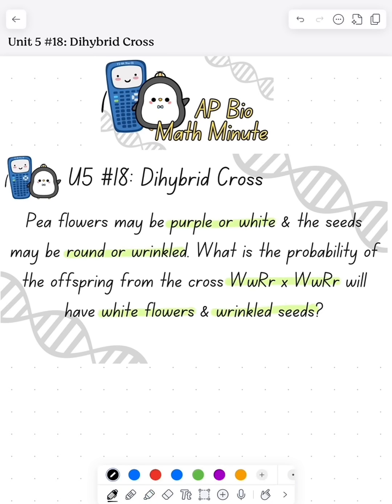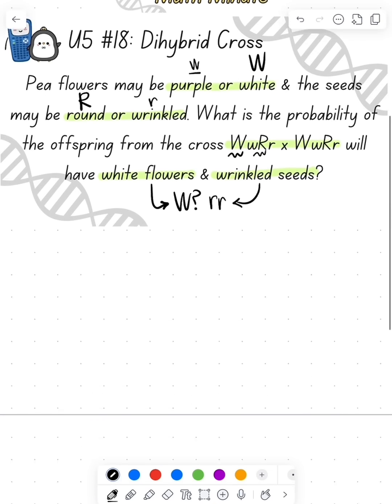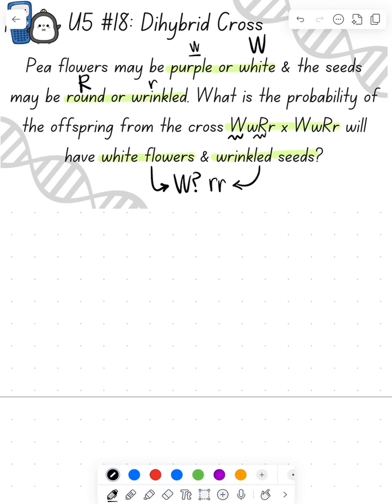Based on the capital W, I know that white is dominant, and the capital R tells me that round is dominant. So a white flower is going to be either homozygous dominant or heterozygous, and the wrinkled seeds have to be homozygous recessive.